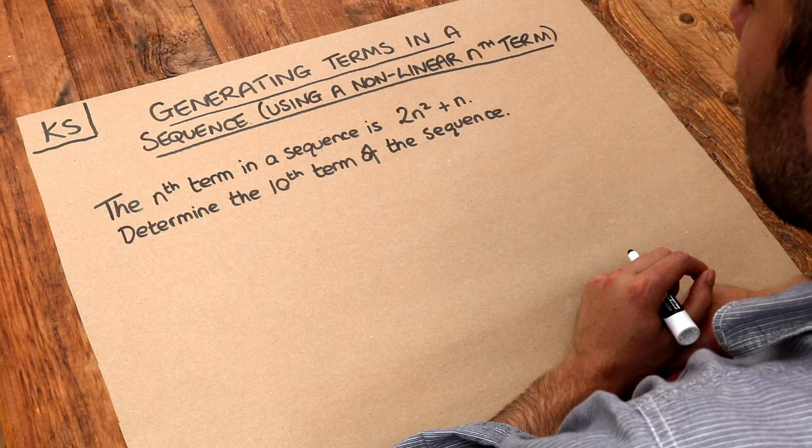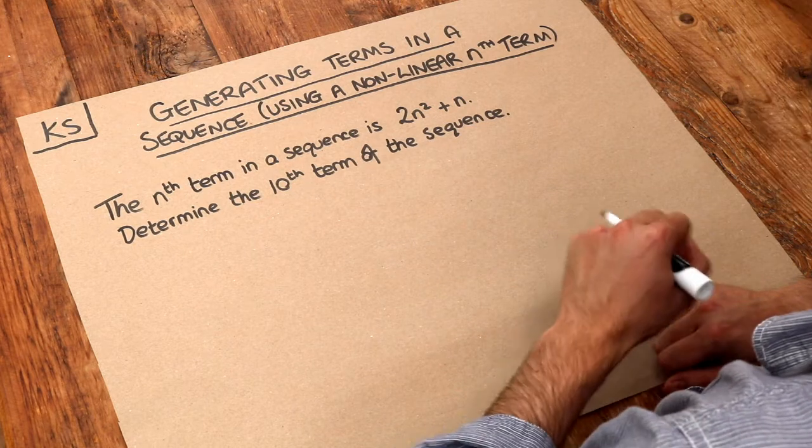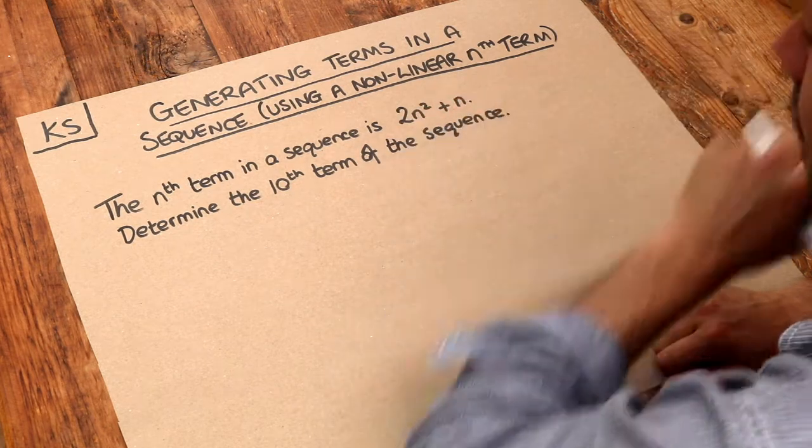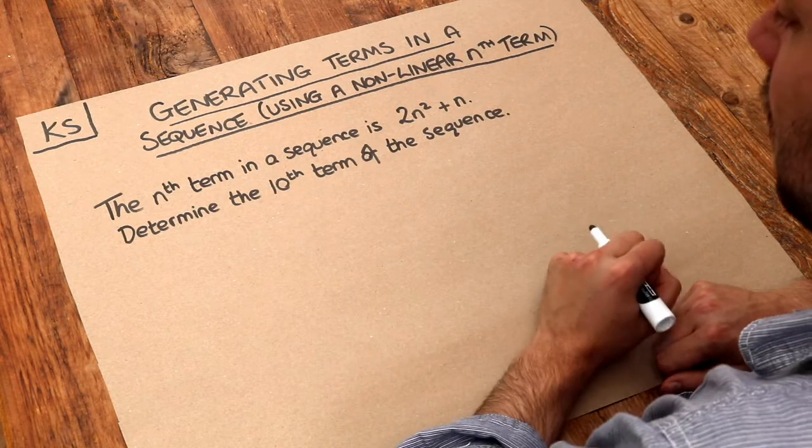Now in the previous video we saw how we could use a linear expression of the form something n plus a number to generate terms of a sequence.